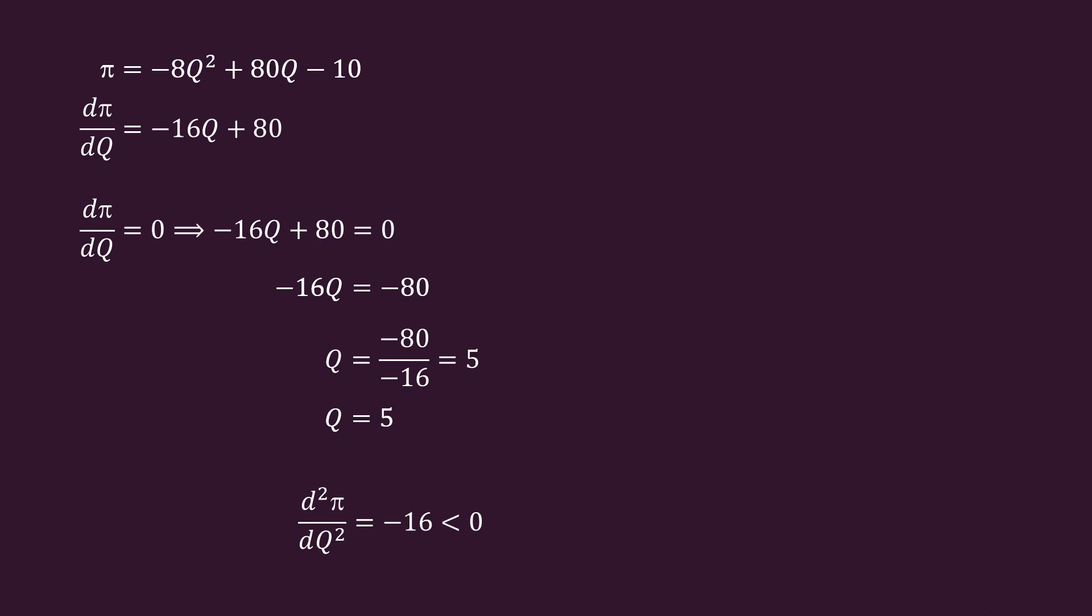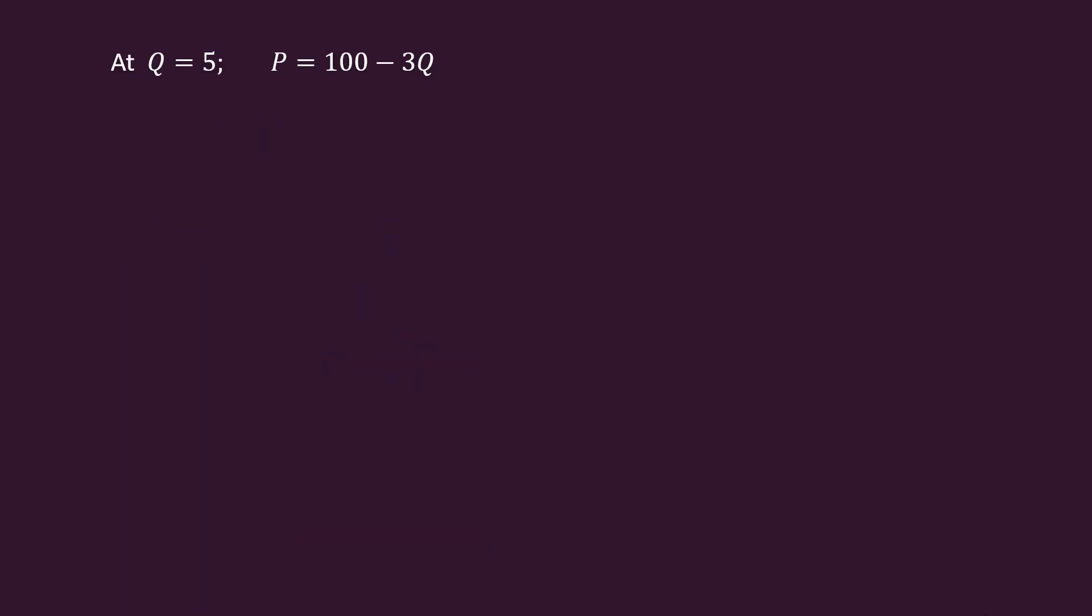Beyond any doubt, we are sure, profit is maximum when output is 5 units. In the problem, what is asked is profit maximizing price. Substitute Q equal to 5 in the demand function. P equal to 100 minus 3 times 5. Price is 85 rupees. This is the answer.